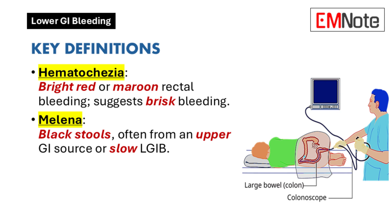In contrast, melena, characterized by dark or black-colored stools, usually signifies bleeding from an upper gastrointestinal source but may also result from slow bleeding in the lower gastrointestinal tract.